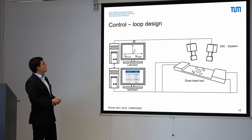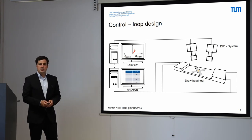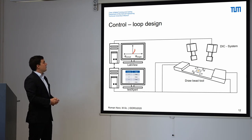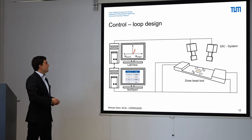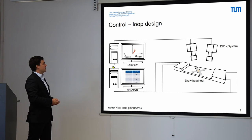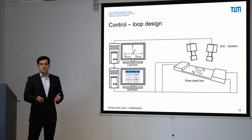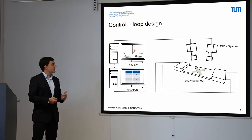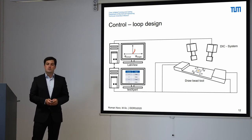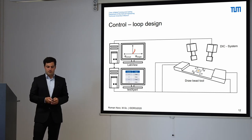The strains are then transferred to a LabVIEW tool via TCP-IP. Within the LabVIEW tool, we compare the strain we have measured to a given strain path, and we give the information to the test expert software. The test expert software is used to control the machine, the Nakajima punch, the height of the draw bead, and also the start and stop of the experiment.